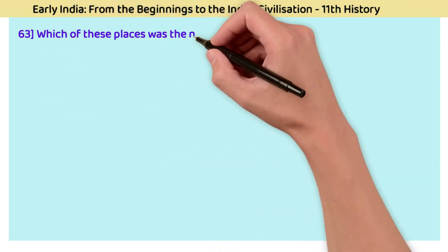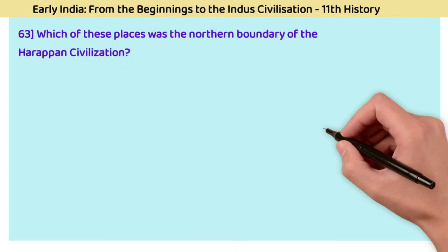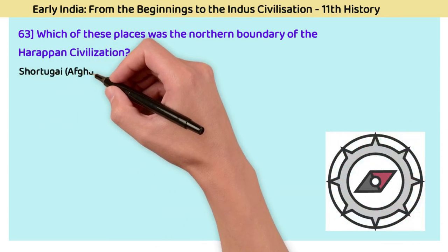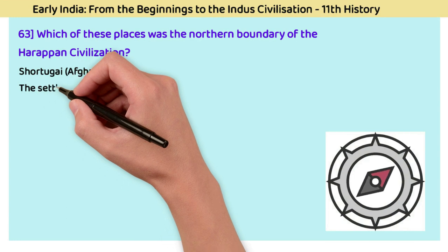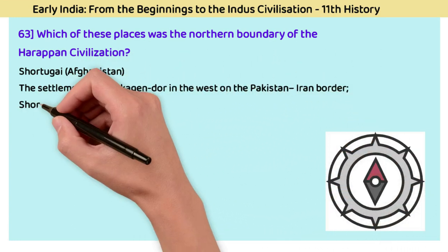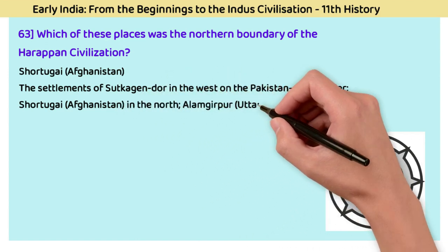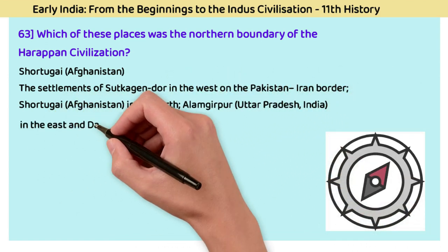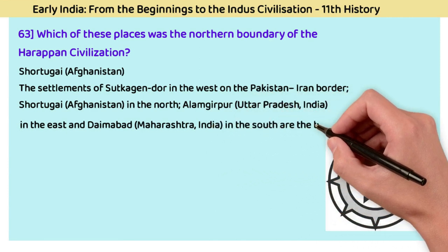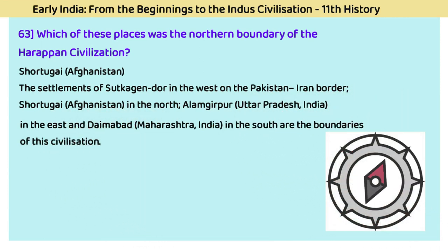Question 63: Which place was the northern boundary of the Harappan civilization? The answer is Shortugai, Afghanistan. The settlements of Sutkagan Dor in the west on the Pakistan-Iran border, Shortugai in Afghanistan in the north, Alamgirpur in Uttar Pradesh, India, in the east, and Daimabad in Maharashtra, India, in the south form the boundaries of the Harappan civilization.